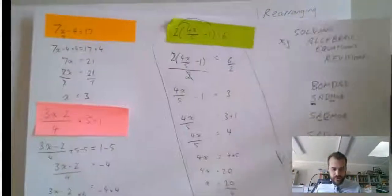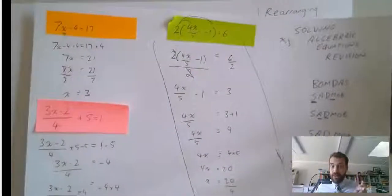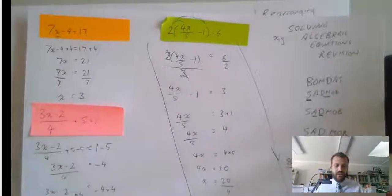Now, in all of those, you've had one unknown. You've had one variable, x usually, and you've solved for x.